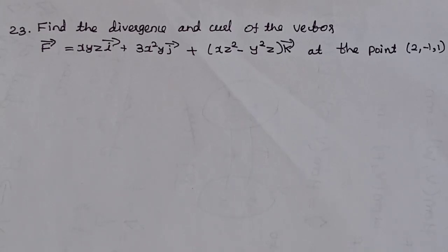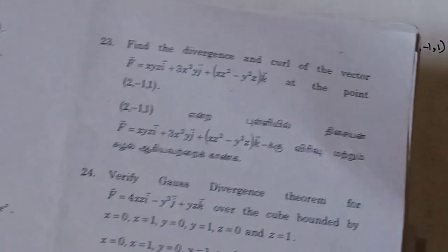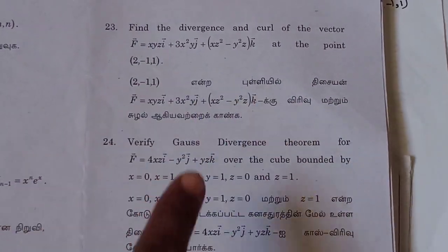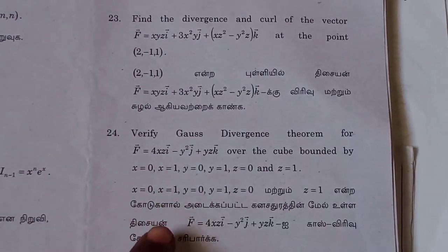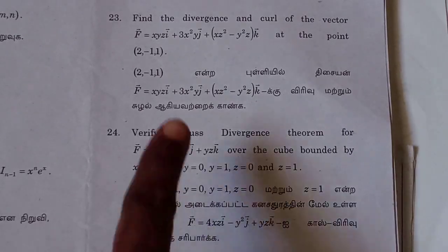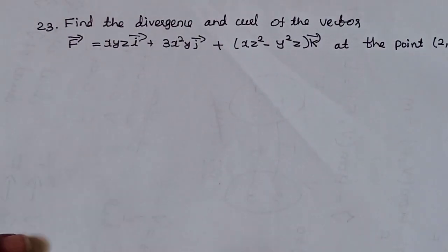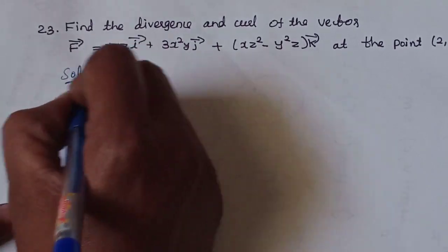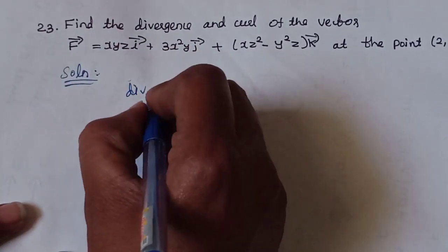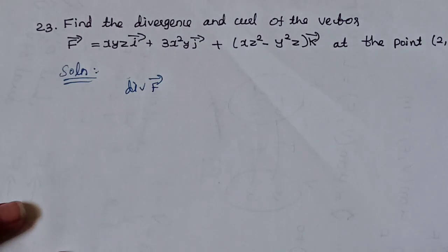Integral and vector calculus, November 2022 question paper. We will talk about 10 more questions — find the divergence and curl of the vector F equation at the given point. This is from the fourth unit. We will also talk about verifying Gauss Divergence Theorem, already in playlist, link in the description below. Now, divergence and curl of the given vector — that is the solution question of the vector. Divergence of F and curl of F at the particular given point.